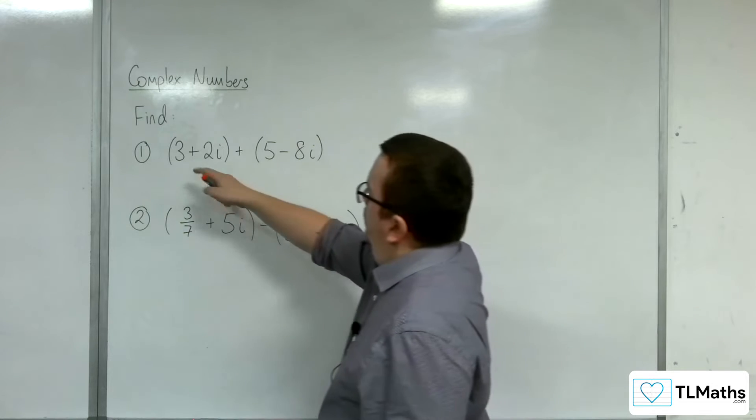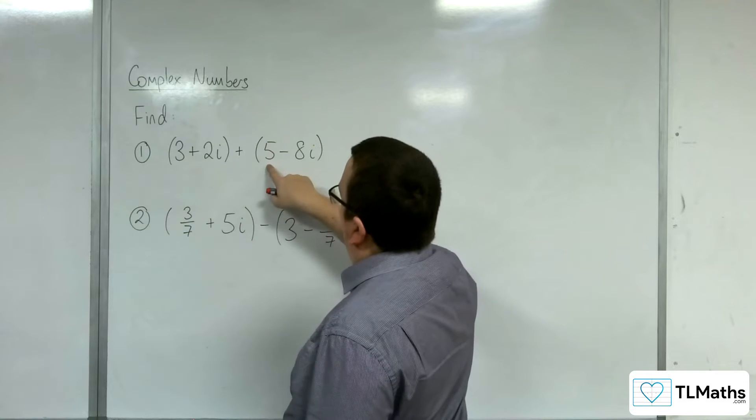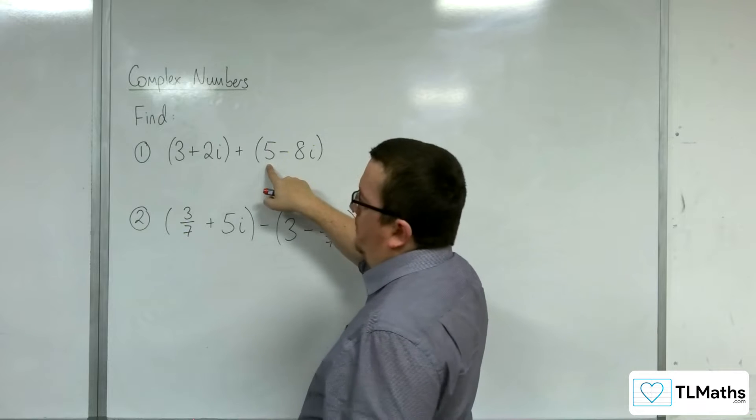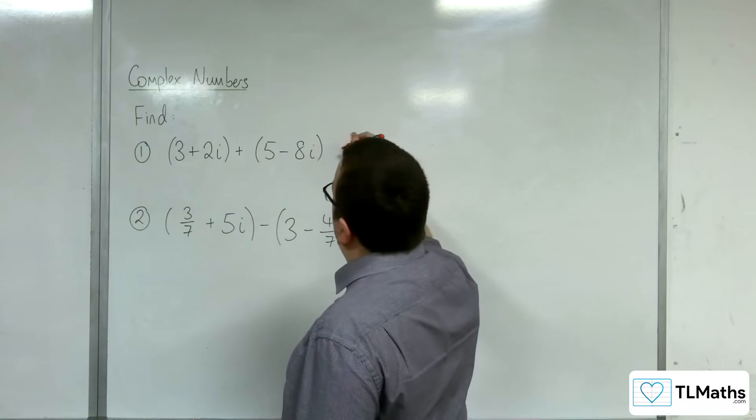So we've got 3 plus 5, it's like combining like terms. 3 plus 5 makes 8.